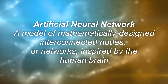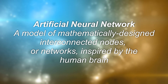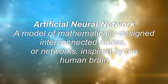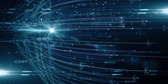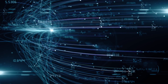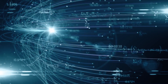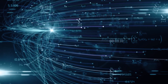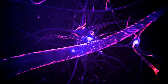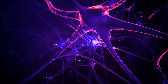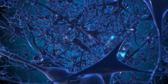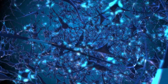Artificial neural networks are computing systems inspired by the biological neural networks that constitute animal brains. An artificial neural network is based on a collection of connected units or nodes called artificial neurons, which loosely model the neurons in a biological brain. Each connection, like the synapses in a biological brain, can transmit a signal to other neurons.